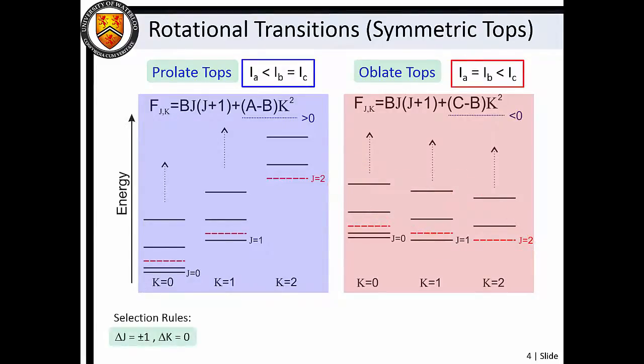The selection rules for symmetric top rotational transitions are ΔJ = ±1 and ΔK = 0. For rigid rotors, this results in a transition expression of νⱼ = 2B(J + 1), which we can again correct with centrifugal distortion constants.